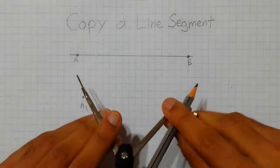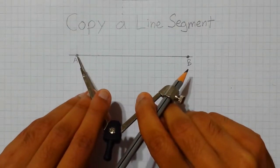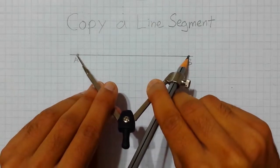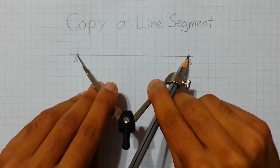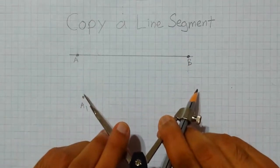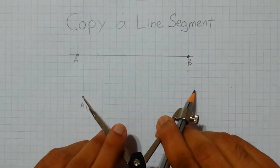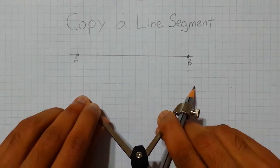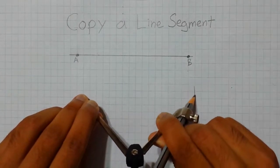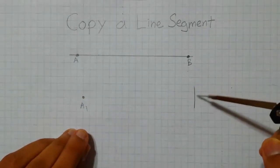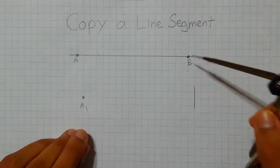We need to place the point of the compass on point A and the other end on point B to measure the length of our original line segment. Then we transfer that onto point A1 and draw a small arc to establish the length of our new line segment, which should be the same as the original.